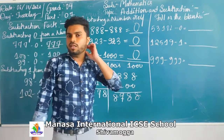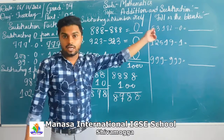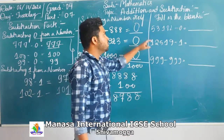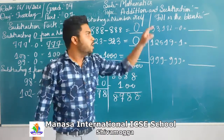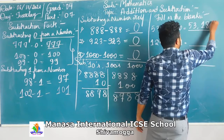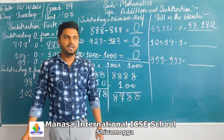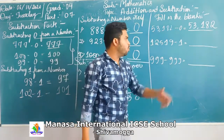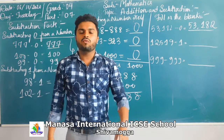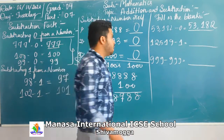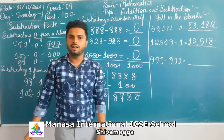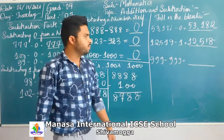Now moving on to filling in the blanks. Using the first property: 53,182 minus 0 gives you the same answer, which is 53,182. Using the second property: 12,519 minus 1 gives you one less number, which is 12,518.